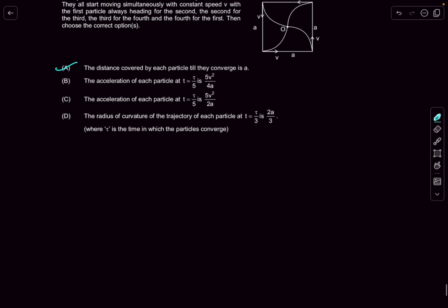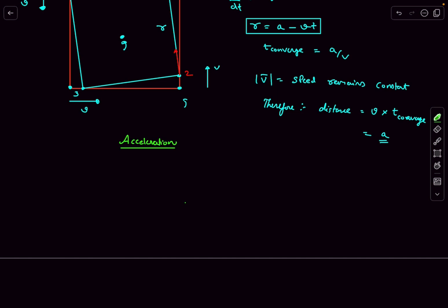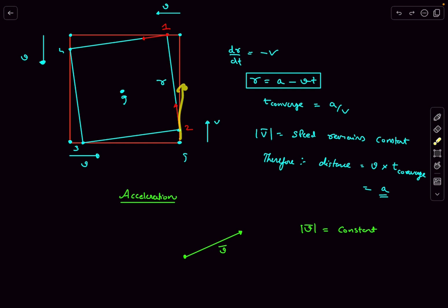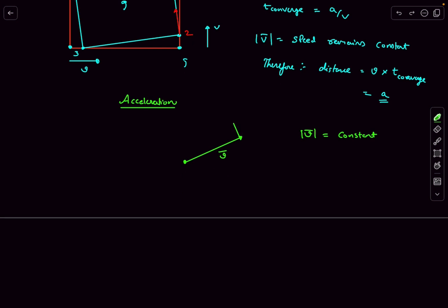The second part asks about the acceleration of each particle at a general time. Since the velocity vector's magnitude is constant, there cannot be a component of dv along the direction of the velocity vector, as that would increase the magnitude. So the change vector dv must be perpendicular to the velocity vector, because the velocity vector is changing its direction.